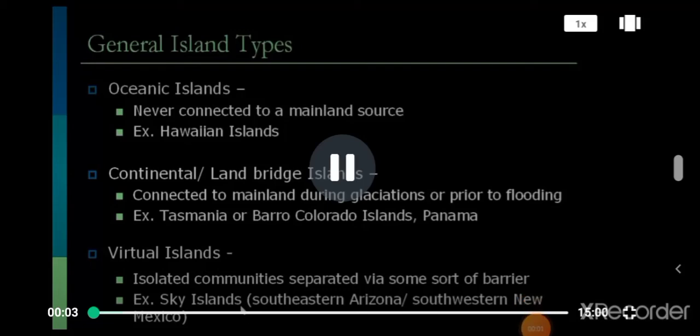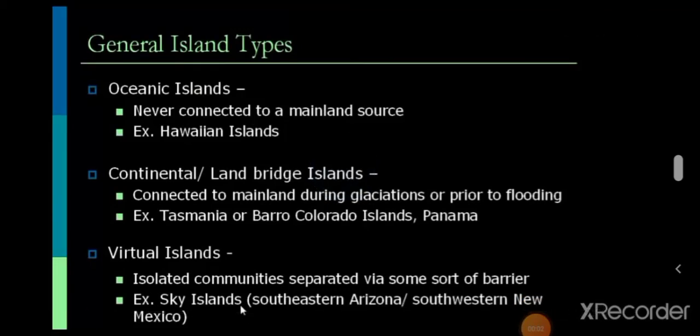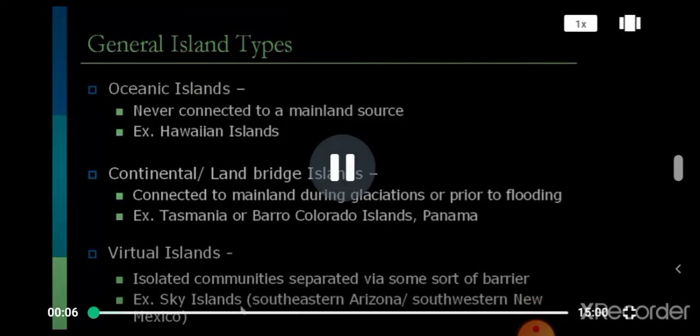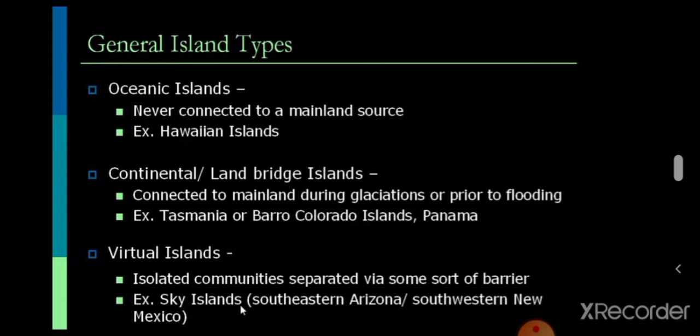Welcome back. Today's topic is the theory of island biogeography. An island is a zone which covers 0.3 percent of a country's geographical area. It includes many islands, for example the Hawaiian Islands, Tasmania, Panama, and the sky islands.